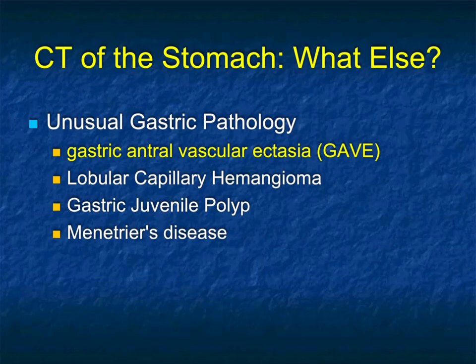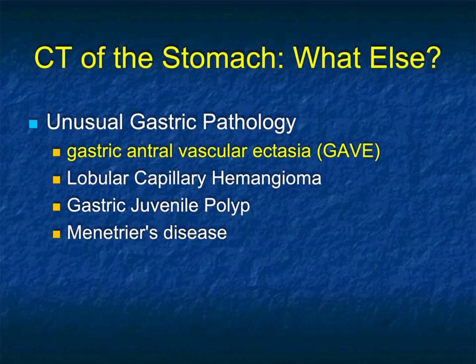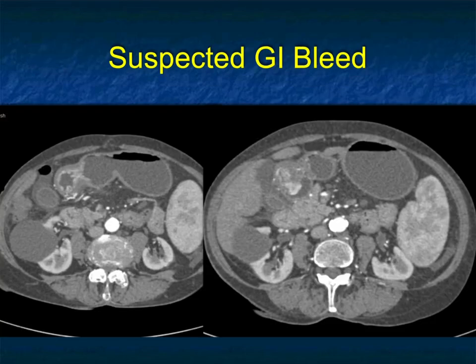There are some unusual entities — I'll cover four of them. I did mention gastric juvenile polyps before, but I'll show that same example again. There's something called gastric antral vascular ectasia, or GAVE, also called watermelon stomach. It's typically in the antrum, very vascular, and you can see it here. You're thinking about carcinoma or maybe a neuroendocrine tumor.